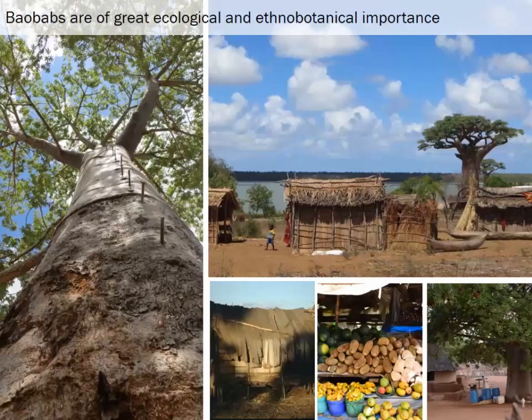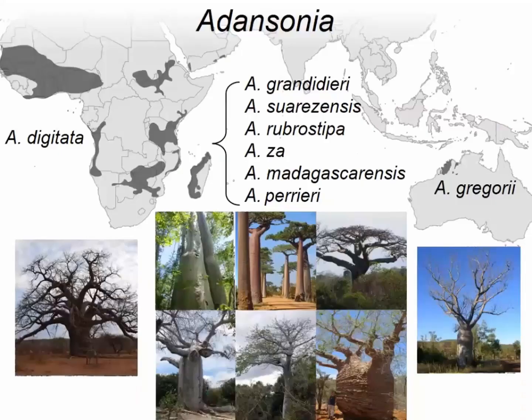In addition to over a hundred documented human uses — from edible tap roots, fruits made into porridges or juice, steamed leaves, use as cisterns, even a tree in South Africa converted into a bar — baobabs are also important ecological species, often characterized as a keystone species.